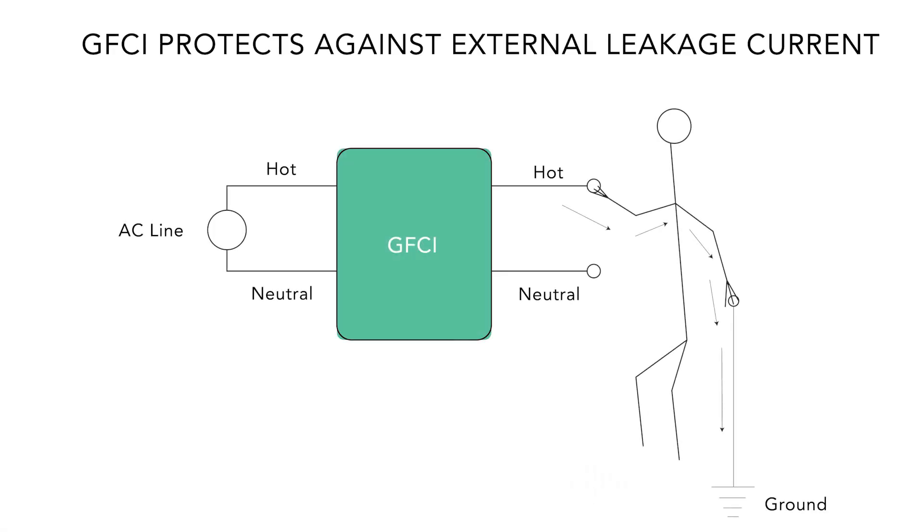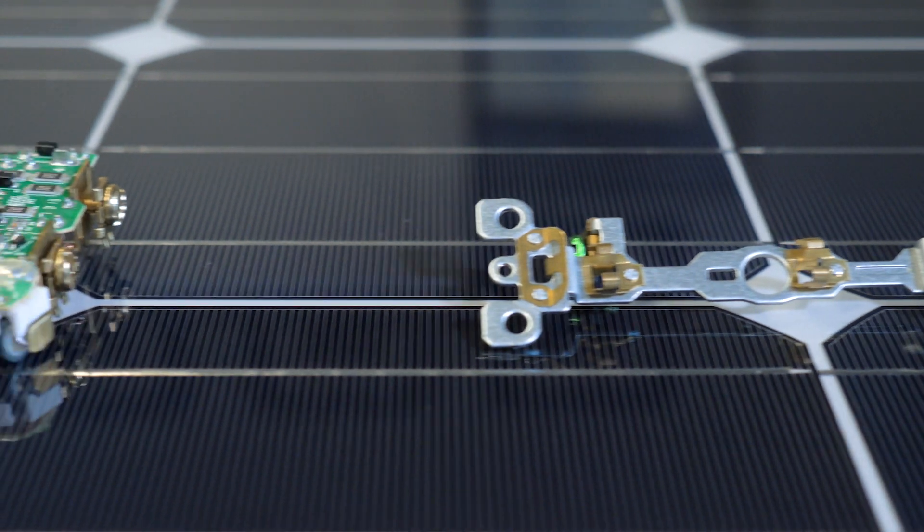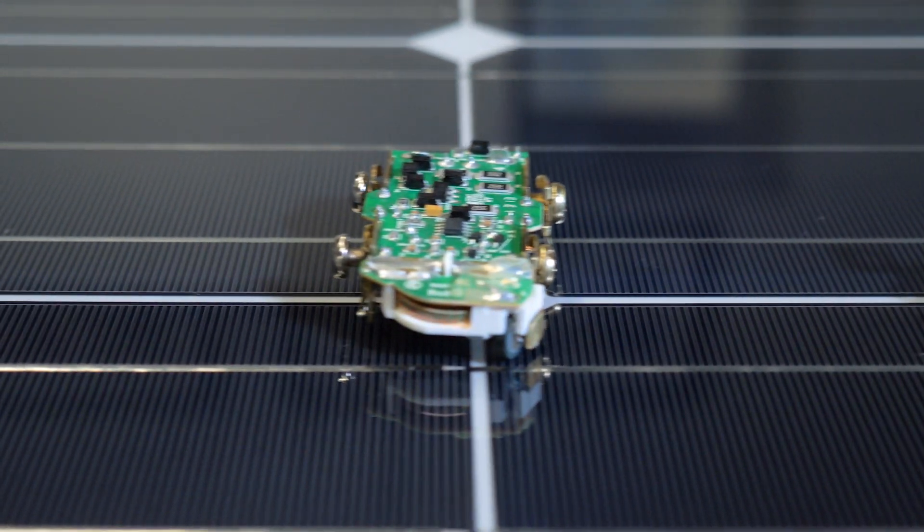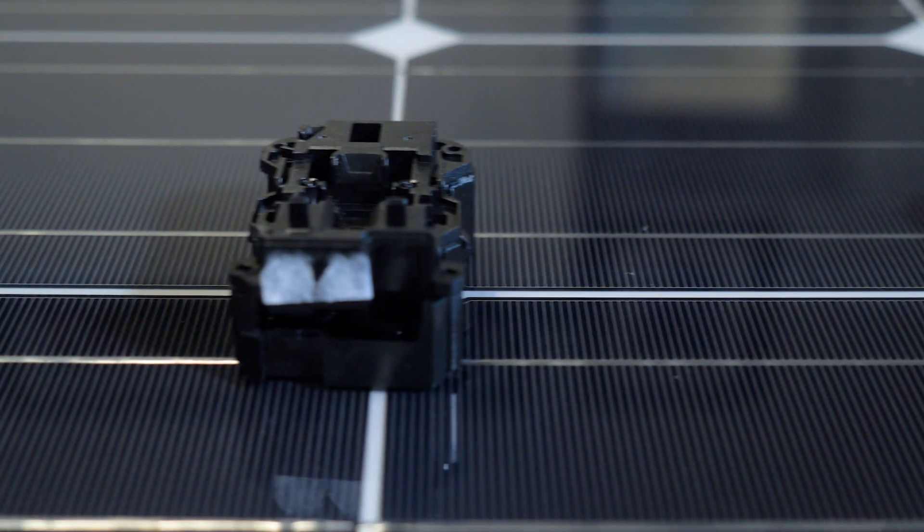GFCIs disconnect the output if they sense a hazardous current flow to ground or if they sense current flowing in the neutral wire. Today we'll take a look at how GFCI outlets sense problems and disconnect the appliances plugged into them.